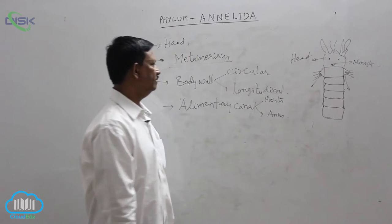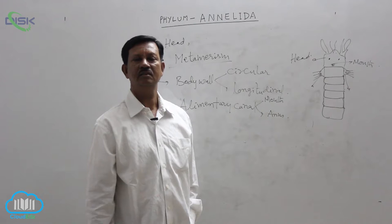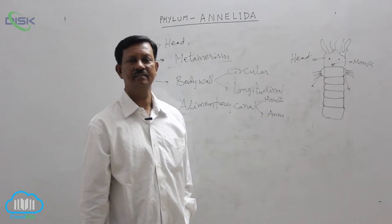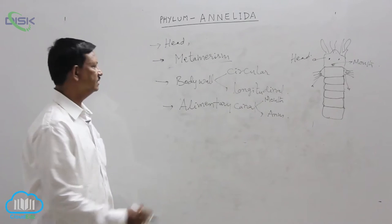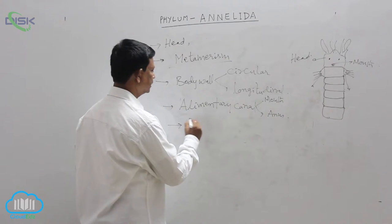In between the mouth and anus there is a buccal cavity, pharynx, esophagus, intestine, etc. Different organs are present here and extracellular digestion takes place.